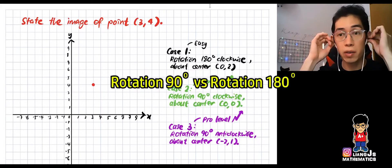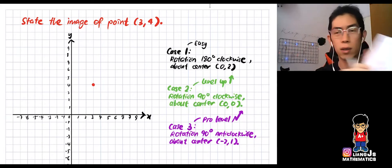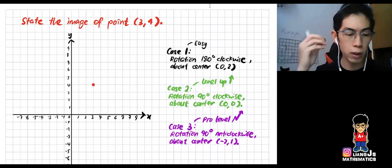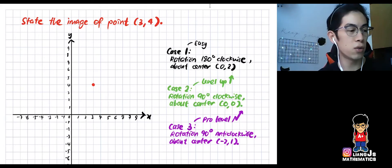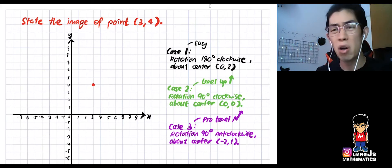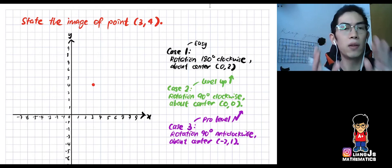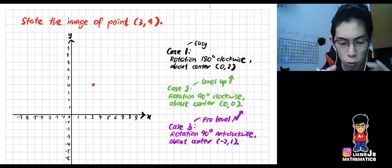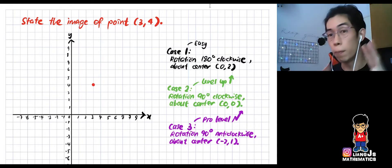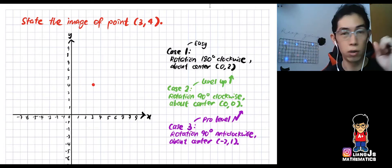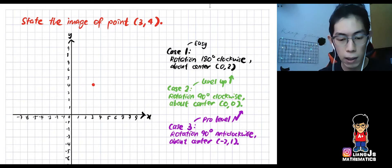Hello guys, today is the next rotation question. The previous two questions were about describing the whole rotation — using either the traditional textbook method or the legendary method. But this question is different. The previous two videos had you describe the rotation given an object and image. Now, this question asks you to state the image of point (3,4).